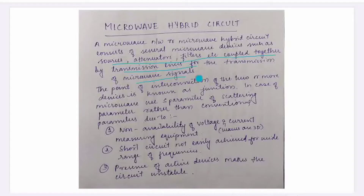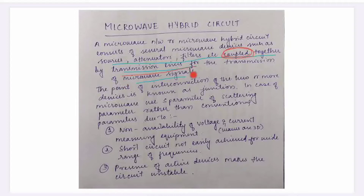That is the main important point: these devices are coupled together by the transmission line for the transmission of microwave signals. A microwave network or microwave hybrid circuit consists of several microwave devices which are coupled together by the transmission line for the transmission of microwave signals.